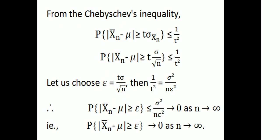We choose epsilon equal to t times sigma divided by root N. Then 1/t squared becomes sigma squared divided by N times epsilon squared. So the probability of |Xn bar minus mu| greater than or equal to epsilon is less than or equal to sigma squared divided by N times epsilon squared, which tends to 0 as N tends to infinity.